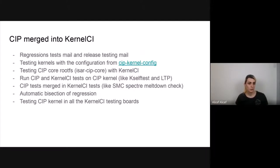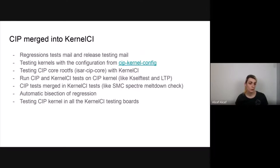We also merged a Spectre/Meltdown check upstream into KernelCI. KernelCI has a tool for automatic bisection of regressions — so if KernelCI finds a regression, it starts automatic bisection and sends a bisection email; we just recently implemented it and hope to see more such emails in the future. By using KernelCI, we can also take advantage of KernelCI resources and all the boards in the connected KernelCI laboratories.